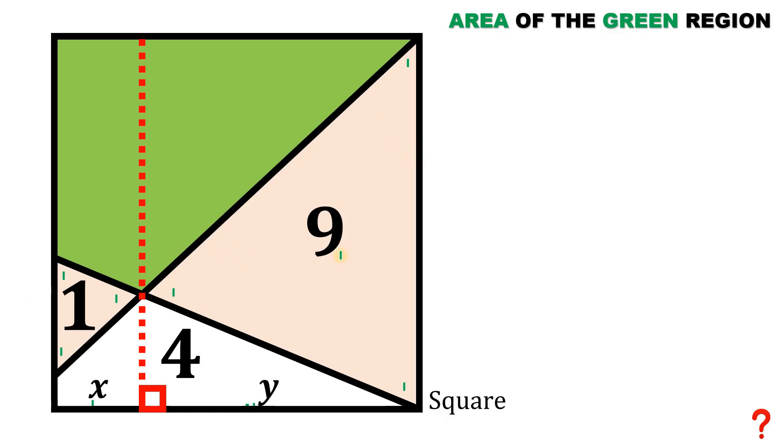So these two triangles are similar. Their corresponding heights must be x and y. Using their similarity, we can say that the ratio of their areas equals the ratio of their heights raised to the power of 2.